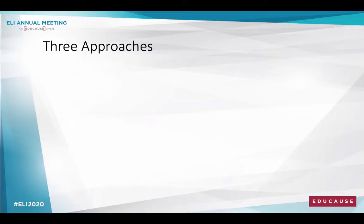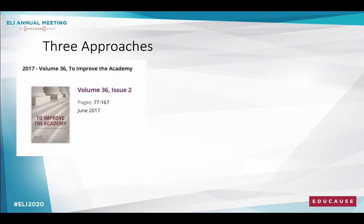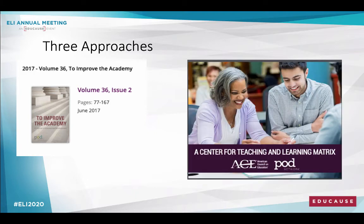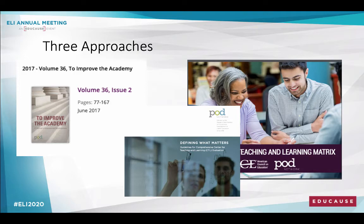Fortunately, we have research upon which to base our impact studies. There are three pieces that I am currently working with to create the impact evaluation of my center at Western Carolina University. Susan R. Hines published a very excellent article, Evaluating Centers for Teaching and Learning: A Field Tested Model, in the June 2017 issue of To Improve the Academy. We also have the ACE-POD Matrix published on the POD website in 2018, as well as the Defining What Matters POD Occasional Report. Two of these are freely available on the POD Network website. If you're a member of POD, you can access the Hines article from the journal; if not, you can request it through interlibrary loan.